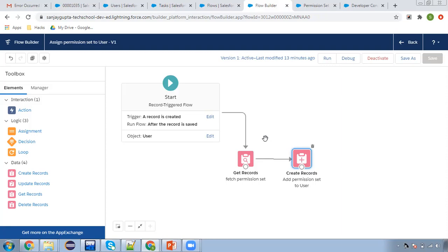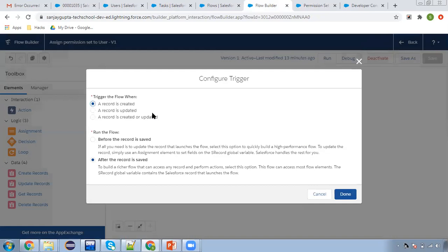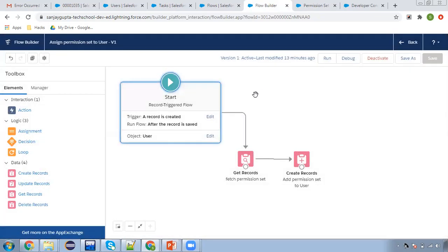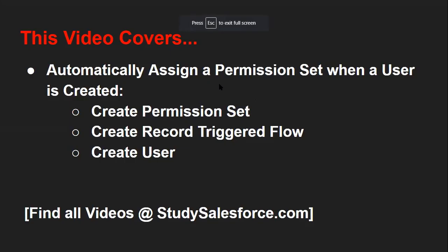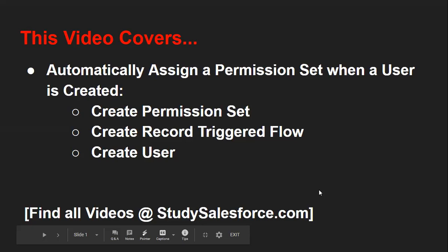And if you want to apply this feature for record updates as well, from here you can choose when a record is updated, or record created or updated both. I hope this way you understood how we can automatically assign a permission set whenever a user record is created. If you want to watch more Salesforce-related videos, all the video links are available on my website, studysalesforce.com — do visit so that you can learn more about Salesforce. Thank you for watching this video.